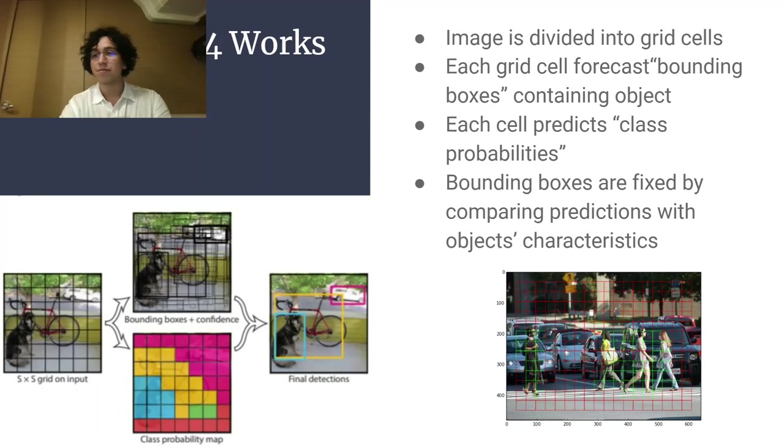Moving on to how YOLO v4 works in a very superficial way. The image or frame is divided into grid cells, like chess, and then each grid cell does a forecast of a bounding box which contains the object. In each cell, predictions are made and class probabilities are assigned, which basically say, I think that cell contains a dog, for instance.